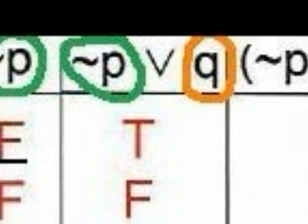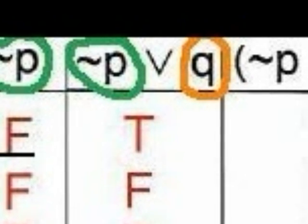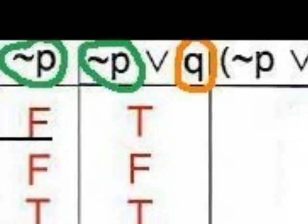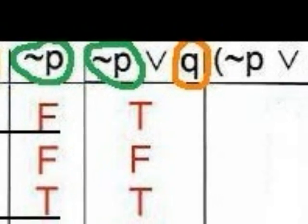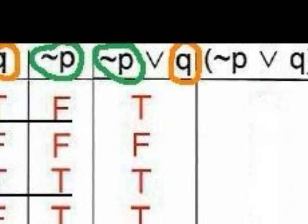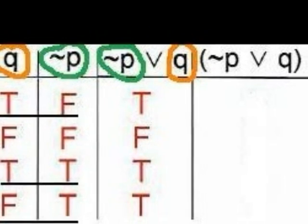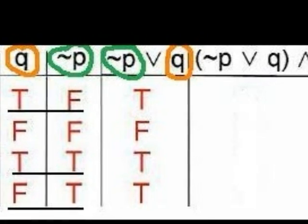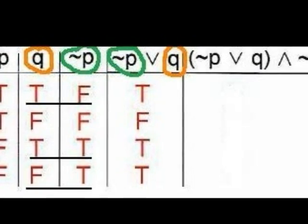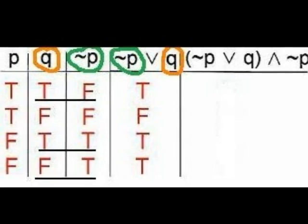To complete the next column, we use the rules for the truth value of an OR statement. An OR statement is true when one or both of the statements in question are true. Since NOT P is on one side of the OR symbol and Q is on the other, we look at the NOT P column and the Q column. In the first line, Q is true, so NOT P or Q is true. In the next line, both Q and NOT P are false, so the OR statement is false. In line 3, both Q and NOT P are true, so the OR statement is true. And in the last line, NOT P is true, so the OR statement is true.